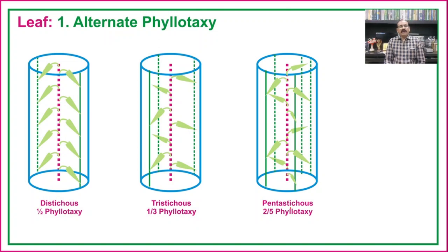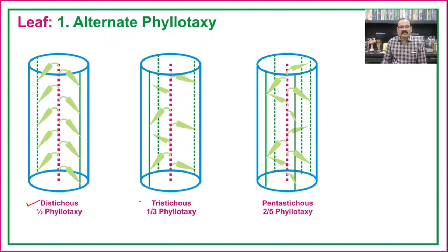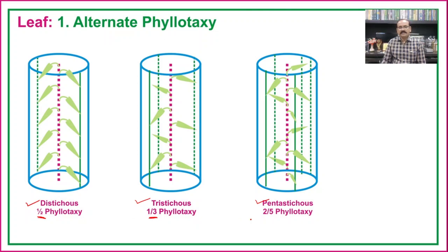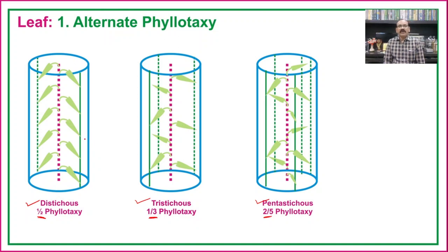The alternate and opposite types are each classified into subtypes. The alternate type of phyllotaxy is classified into distichous, tristichous, and pentastichous. Distichous is also known as 1/2 phyllotaxy; tristichous is 1/3 phyllotaxy; and pentastichous is 2/5 phyllotaxy.